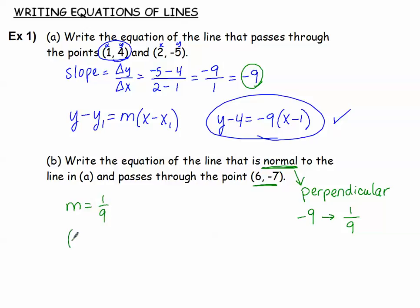They gave us a point to use: the point is (6, -7). Let's use point-slope form again. y plus 7, because we're subtracting a negative, equals 1/9 times x minus 6. Again, it didn't say what form to leave it in, so we pick the form we want.